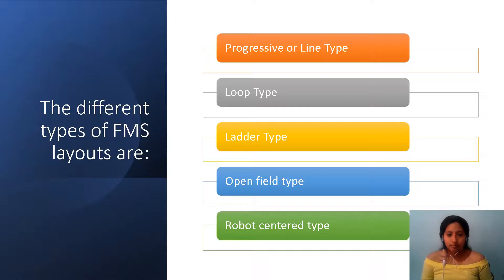The different types of flexible manufacturing system layouts are: progressive or line type, loop type, ladder type, open field type, and robot center type.